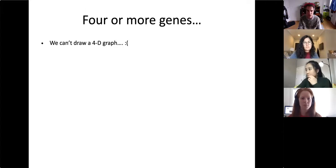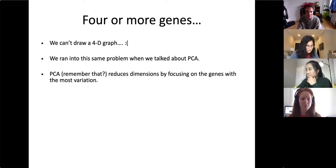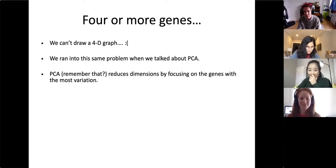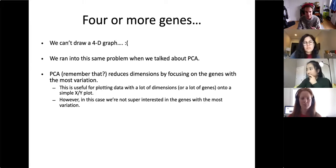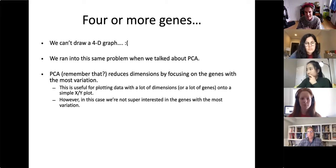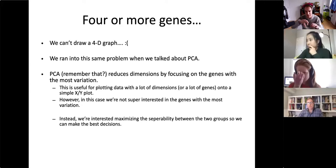What if we need four or more genes? When we have four or more genes we can't draw that graph at all. We ran into the same problem with PCA — remember, PCA reduces dimensions by focusing on the genes with the most variation, which is useful for plotting high-dimensional data onto a simple XY plot. However, in this case we're not interested in genes with the most variation; we're interested in maximizing the separability between the two groups.